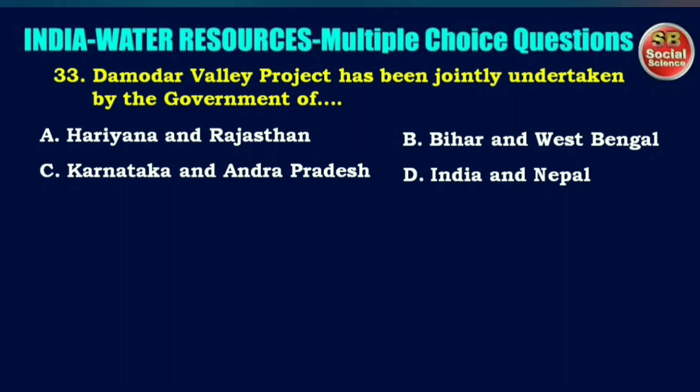Damodar Valley project has been jointly undertaken by the government of — options are Haryana and Rajasthan, Bihar and West Bengal, Karnataka and Andhra Pradesh, or India and Nepal. The right answer is option B: Bihar and West Bengal.